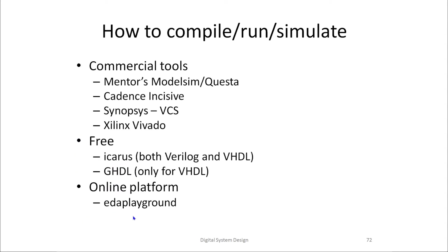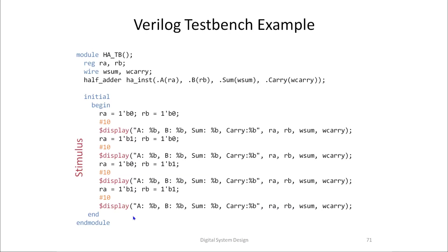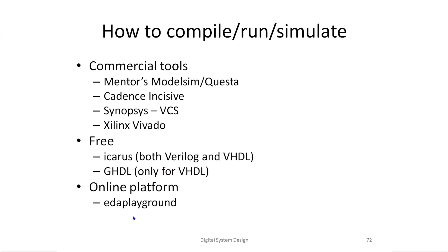The next question is: how will we compile, run, or simulate? What do these three things mean? Compile means it is a high-level language, so we need a compiler. After compilation, an executable is formed. Running that executable is also called simulation because we are simulating the hardware behavior. So how do we compile, run, and simulate the hardware model?